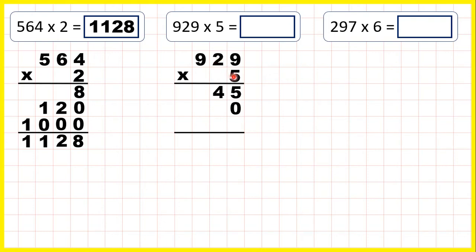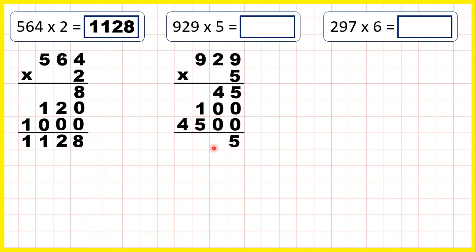Two times five is ten. We can move on to our third answer line, but we need two zeros at the end — zeros in our tens and ones — because we're multiplying by our hundreds digit. Nine times five is forty-five. Now we just add up our answer lines and we get four thousand six hundred and forty-five.